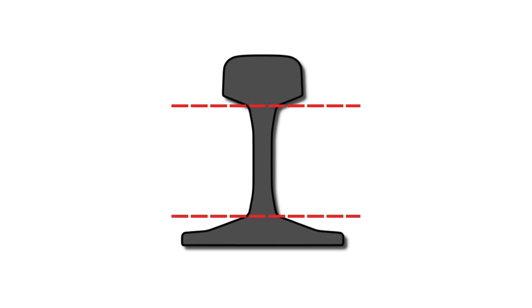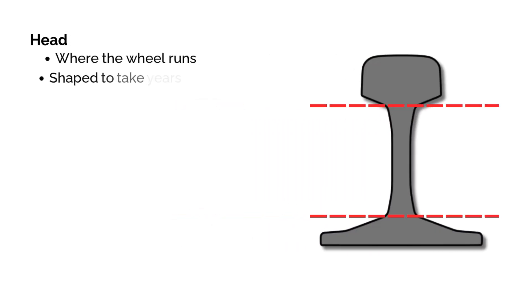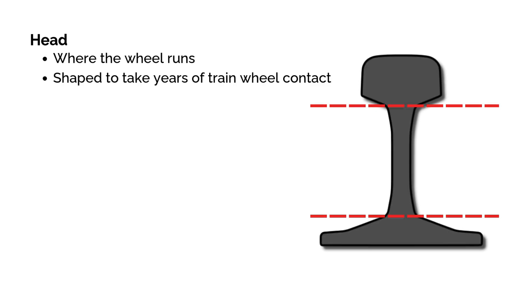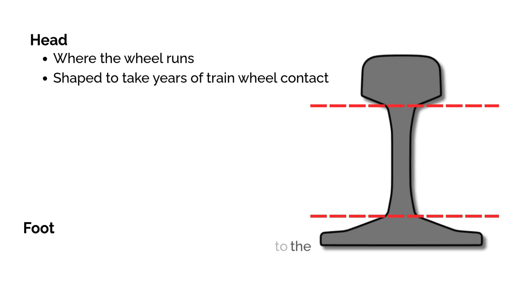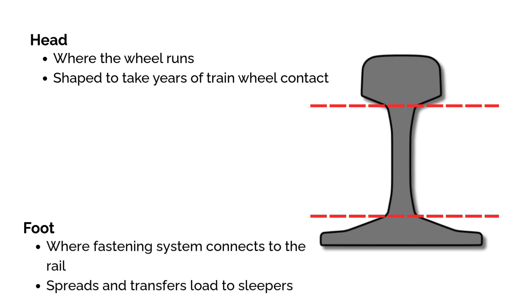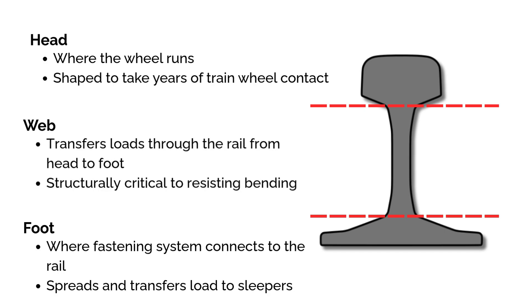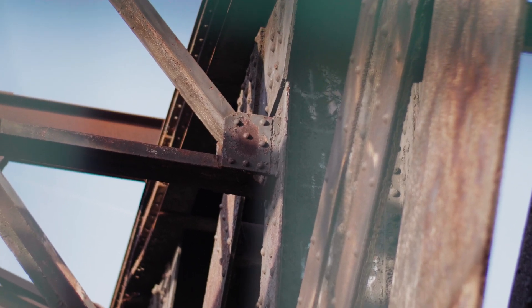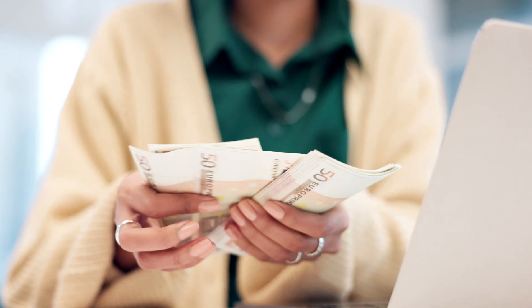Modern rails have a specific profile: thick at the top, narrow in the middle, wide at the bottom. The head is where the wheel runs — it's shaped and sometimes hardened to take years of rolling contact. The foot sits in the fastening system and spreads the load onto the sleeper beneath. Between them is the web, which connects the two and transfers the vertical load down from the wheel through the rail to the foundation. The shape as a whole acts like an I-beam: concentrated material where it can best resist stress, while keeping the rail economical to produce and install.